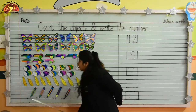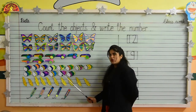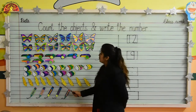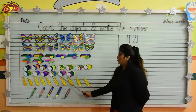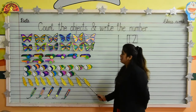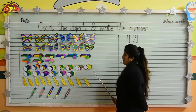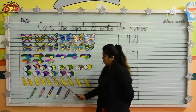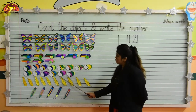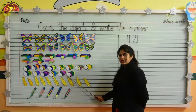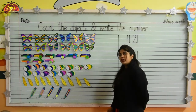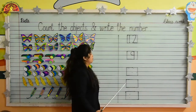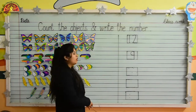Kids, tell me how many lasers are there? Let's count with me: 1, 2, 3, 4, 5, 6, 7, 8, 9, 10, 11, 12, 13, 14. Now we will write numeral 14. Numeral 1, 4 — 14.